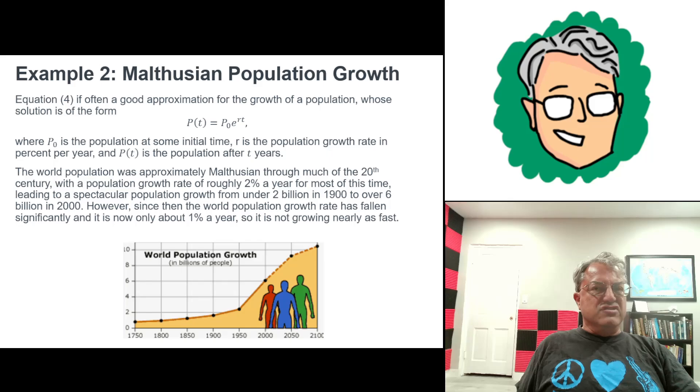But the good news is that it's slowed down quite a bit in the 21st century. I guess most of the world now is more developed. And people are either using contraceptives or they're not having as many kids. They're moving into cities and they're not growing as fast as they used to, I guess. So that's good news.